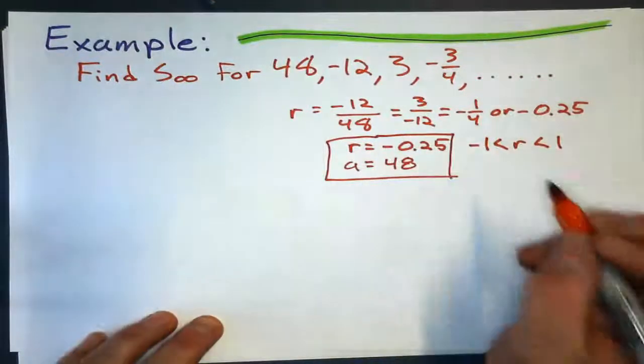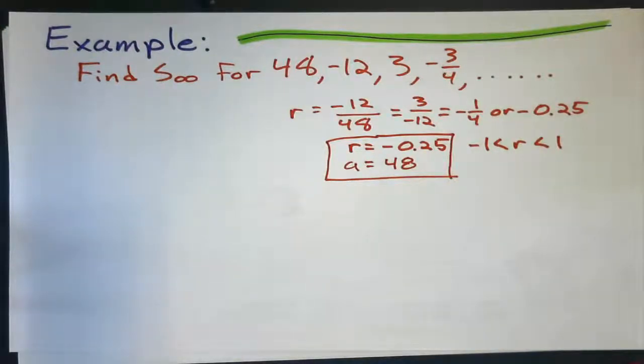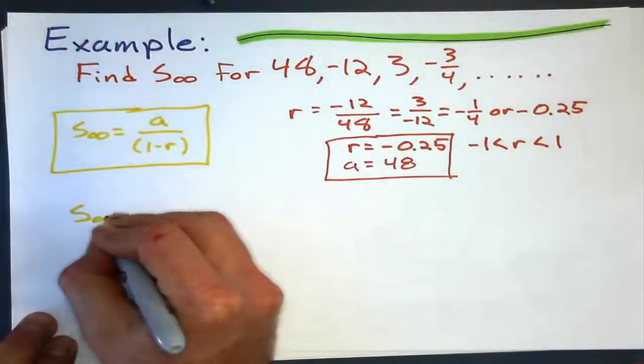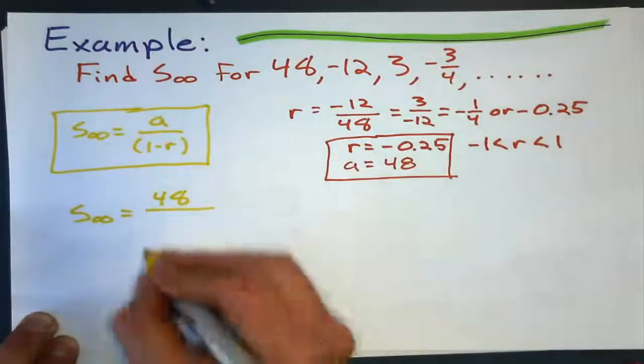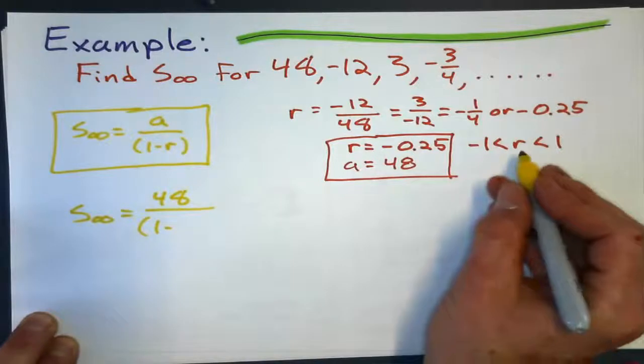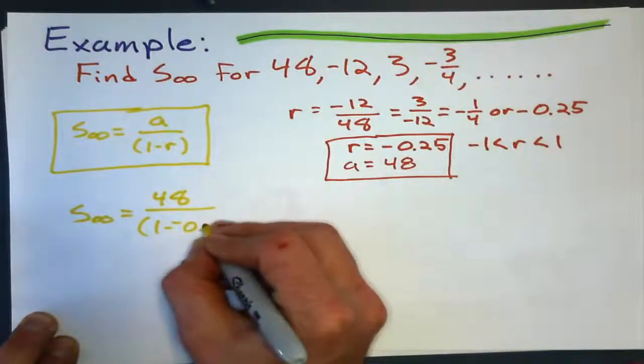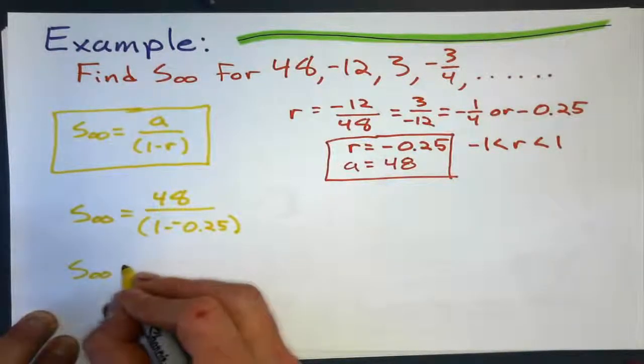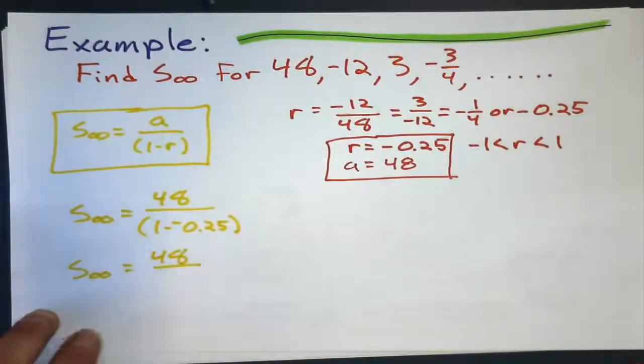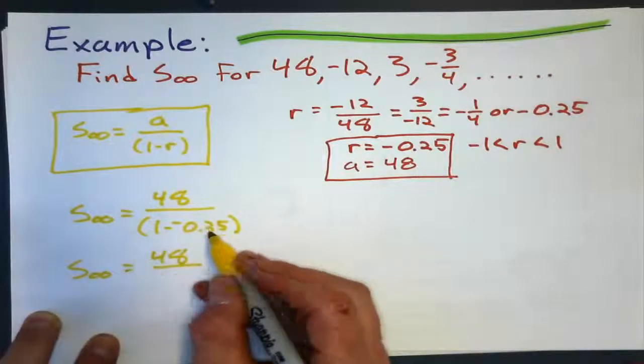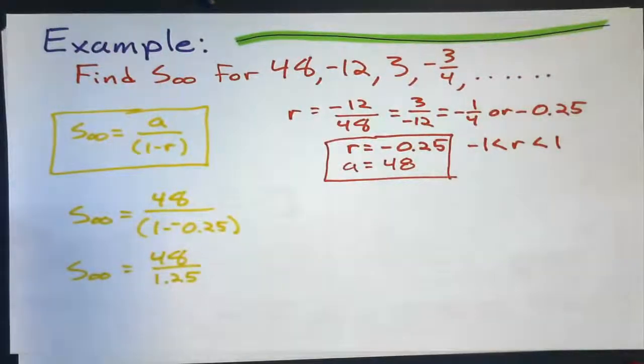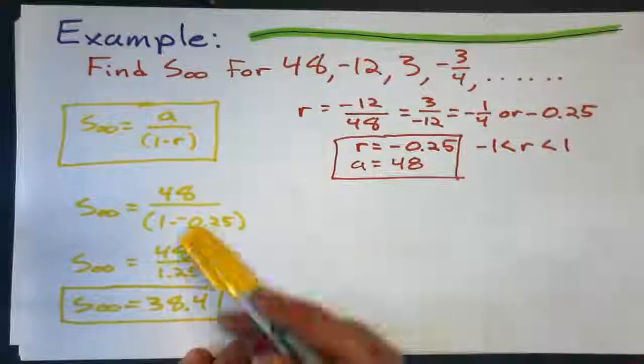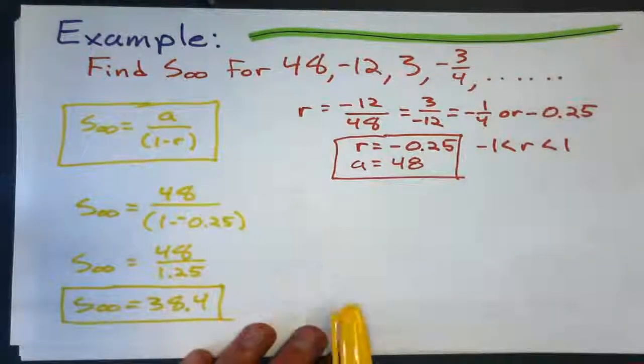Now we'll use the formula to find out what it equals. Well, pretty straightforward sum to infinity for this sequence. Equals first term, 48, divided by 1 minus the common ratio, which is negative 0.25. So sum to infinity equals 48 minus the negative is plus. So 1 minus negative 0.25 gives me 1.25. So, let's sum to infinity using the formula derived from sum of first n terms.